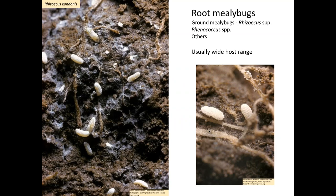Root mealybugs are a pest I get questions about very uncommonly, but I hear people talk about it as though it's very common. There are ones called ground mealybugs — Rhizoecus species — and several others that can be on roots of plants. We've even seen what I believe are citrus mealybugs coming up from bulbs in a trial we did here. I had never heard of citrus mealybugs being on roots of plants or bulbs before, but I suspect that's where they were in that particular case.